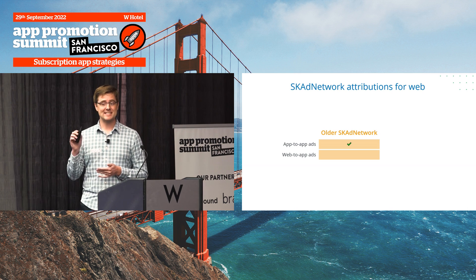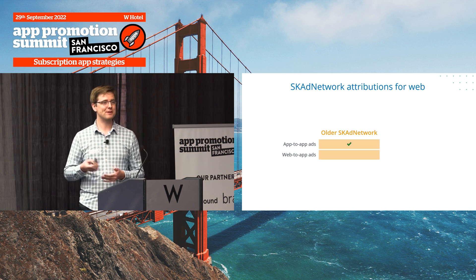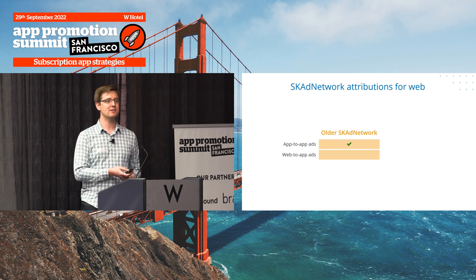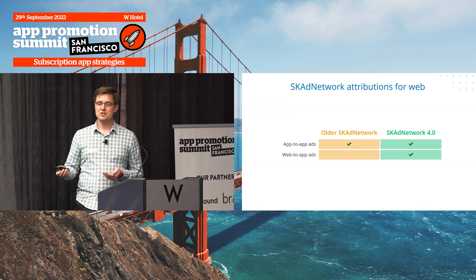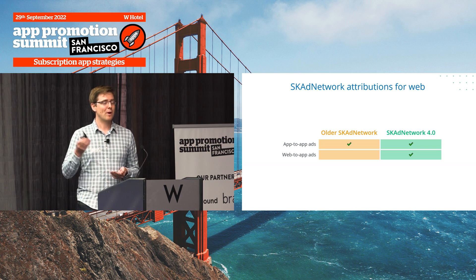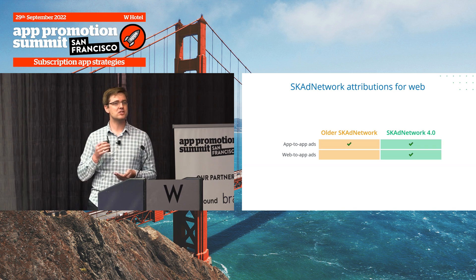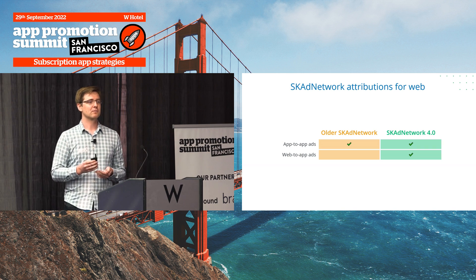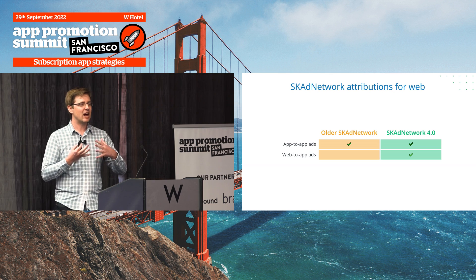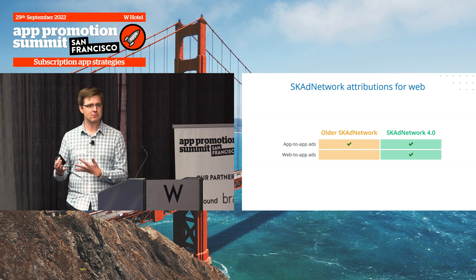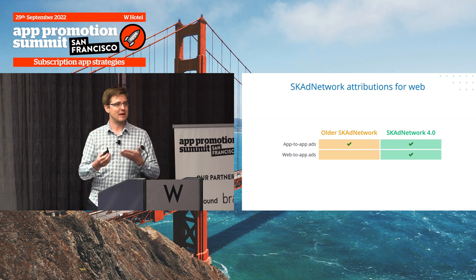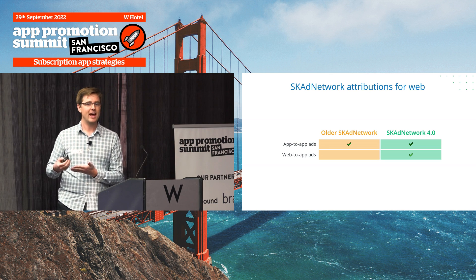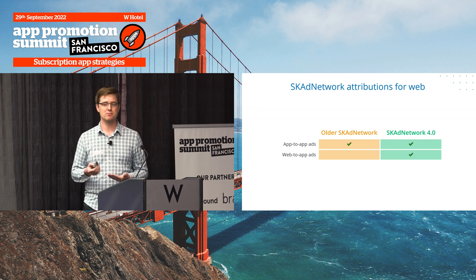The first improvement is SKAN attributions for web. This is pretty straightforward. Previous versions of SKAdNetwork supported app-to-app measurement only. The new version supports web-to-app ads. This is really cool because it unlocks a lot of new acquisition options that were possible in the past, became impossible for a while, and will now be back on the table.